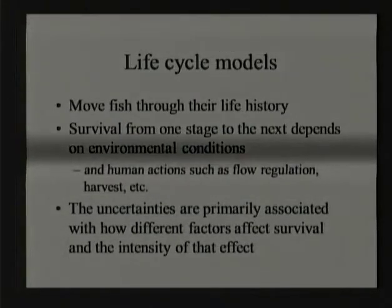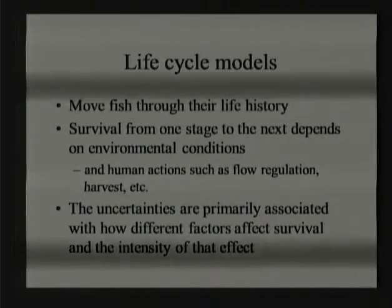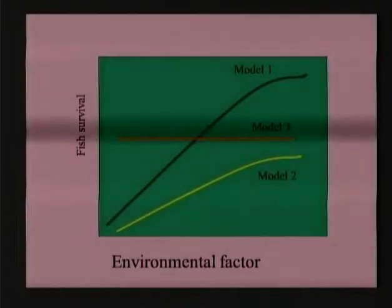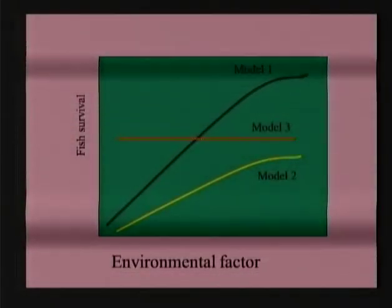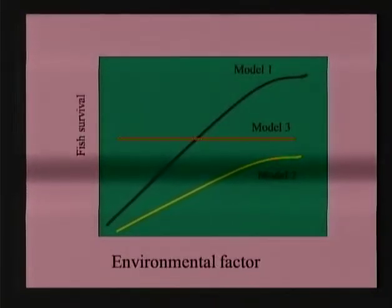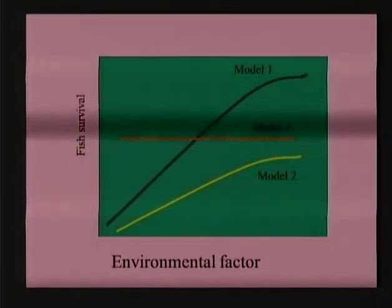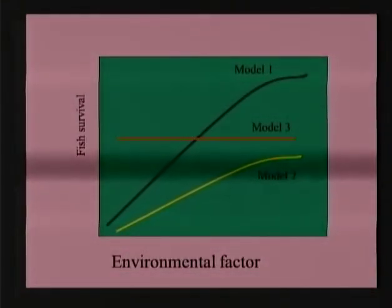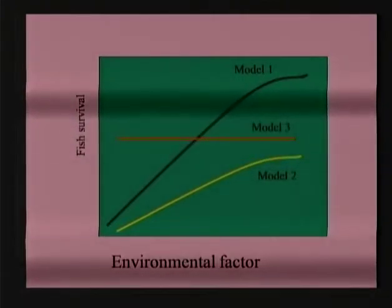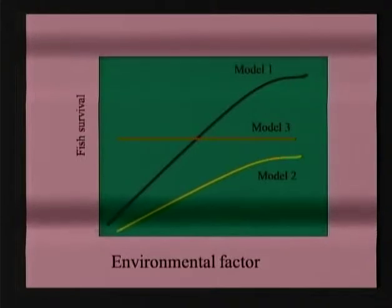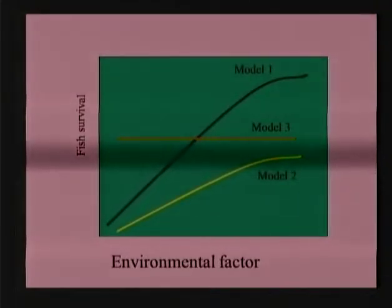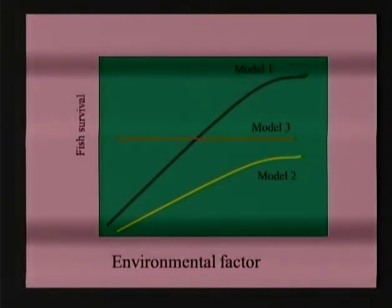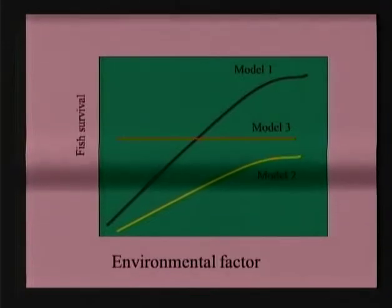The uncertainty in models is primarily associated with how different factors affect survival and the intensity of that effect. When we say we're uncertain, it means we simply don't know exactly how much factor X affects survival at life stage Y. Inside a model we relate fish survival on the Y axis to some environmental factor, and there might be three possible relationships. In general, we can't say with certainty that one is true — we'll almost always have competing relationships that are roughly consistent with the data, which is why you have to consider across a range of possible models.